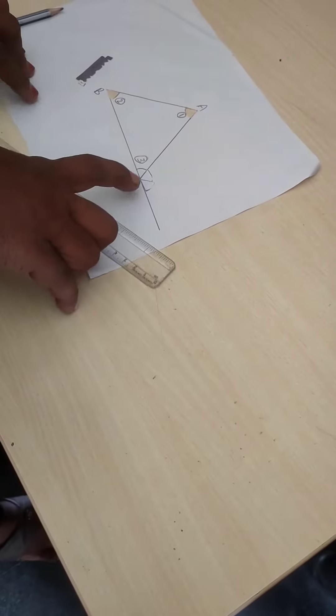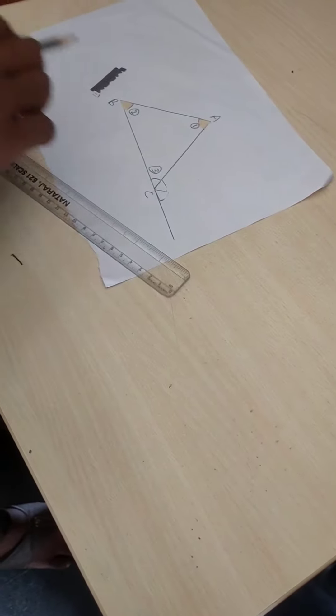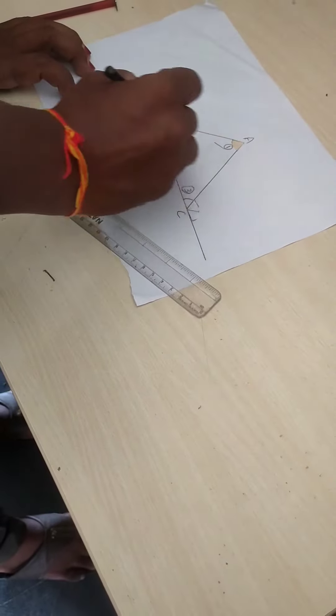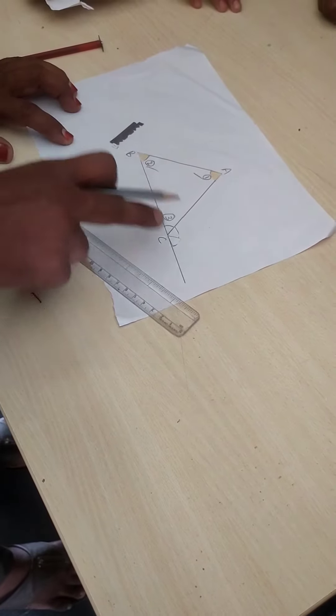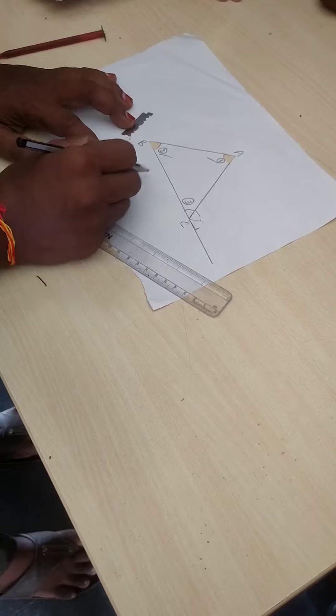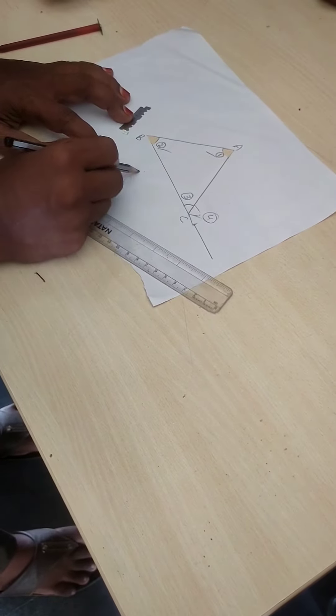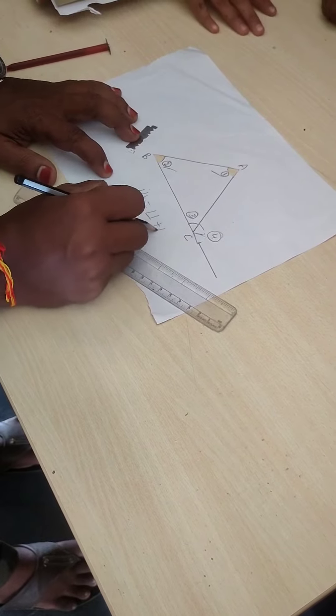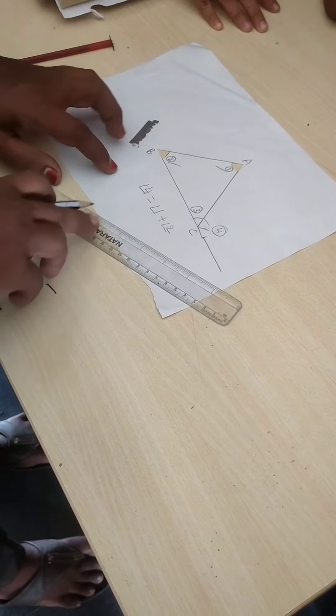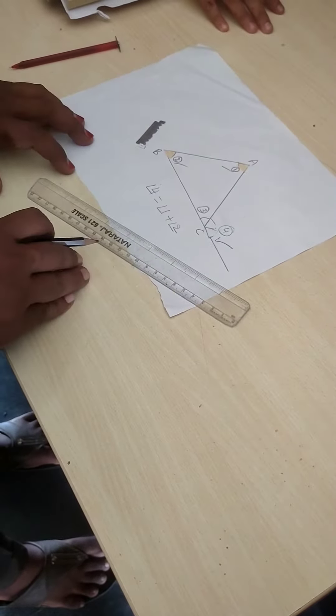So an exterior angle of a triangle is equal to sum of its interior opposite angles. So angle A plus angle B is equal to an exterior angle of C. So let's take this is the fourth part. So angle 4 is equal to angle 1 plus angle 2.